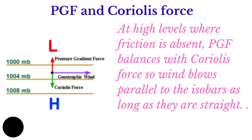Looking at the diagram, on one side we have high pressure and on the other we have low pressure. If it were only the pressure gradient force at work, the wind would blow perpendicular to the isobars, straight from high pressure to low pressure. However, because of the Earth's rotation and Coriolis force, the Coriolis force balances the pressure gradient force, causing the wind to blow parallel to the isobars — in the same direction as the isobars.